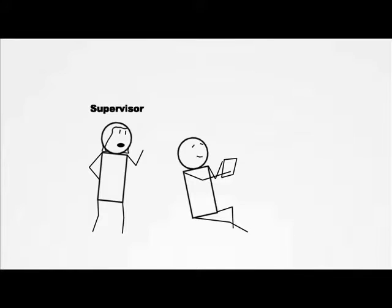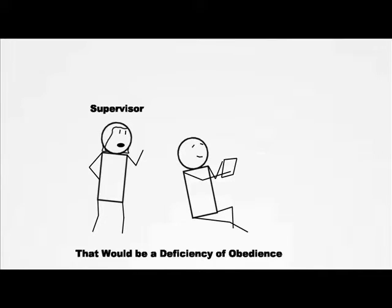For example, if your supervisor tells you to move some boxes for her, but you decide not to because you'd rather play with your iPad instead, that would be a deficiency of obedience.